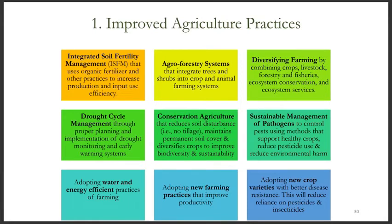Improved agriculture practices include a broad range of practices that improve the climate resilience, adaptation, and mitigation of agricultural systems. Among other things, these practices include integrated soil fertility management and agroforestry systems, diversifying farming by combining different agricultural activities, drought cycle management practices, conservation agriculture that protects and nurtures the soil, sustainable management of pathogens and pests, and water and energy efficient farming practices, as well as new crop varieties with better disease resistance.